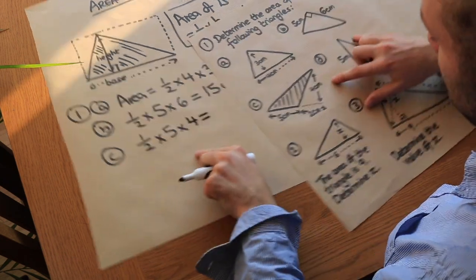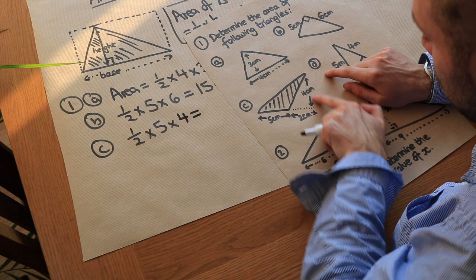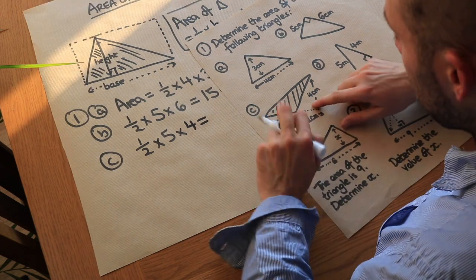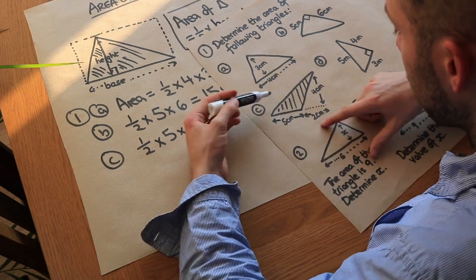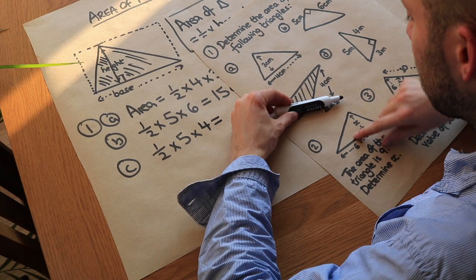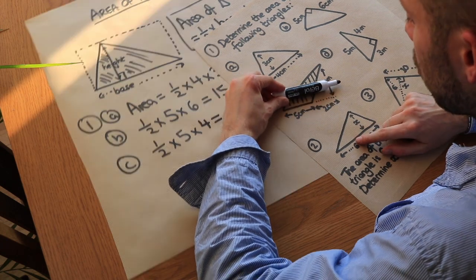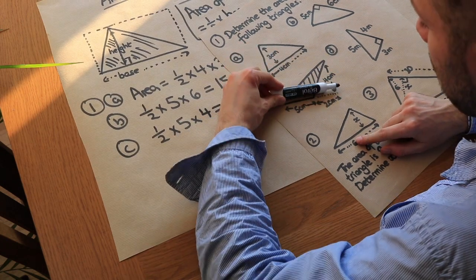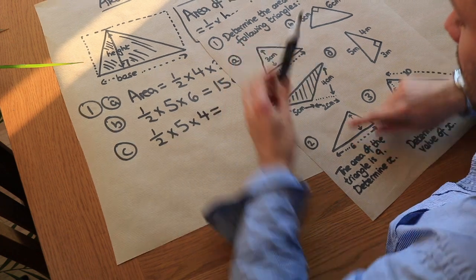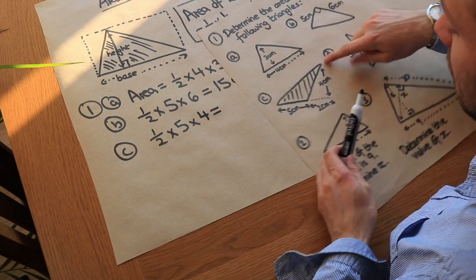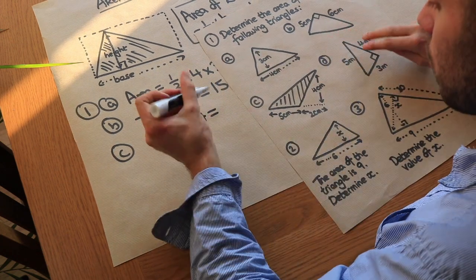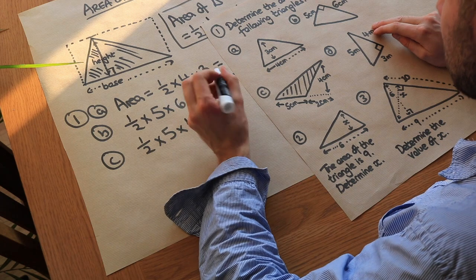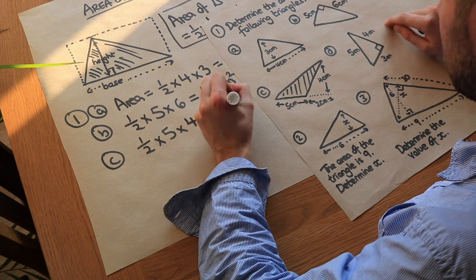That might seem confusing because we've drawn the height outside the triangle. But the distance from this base to the top of the triangle is 4 centimetres — that perpendicular height is 4. So it's half times 5 times 4, which gives 10 centimetres squared.